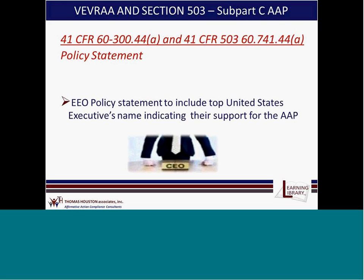Under Section 503, contractors must include in their EEO policy statement the title and name of the company's senior executive and indicate their support for the Affirmative Action Plan. The OFCCP is looking for your CEO of the entire organization within the United States — not the president of a business segment. The CEO does not have to sign the EEO policy statement; the president of a facility can sign it, but the CEO's name must be mentioned in the statement.